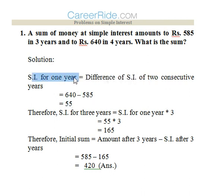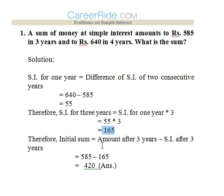So simple interest for 1 year is 55. Now we find the simple interest for the first 3 years: SI for 1 year, that is 55, into 3 equals 165. We know the amount after 3 years is 585. So the initial sum is 585 minus 165, which equals 420. That is the answer.